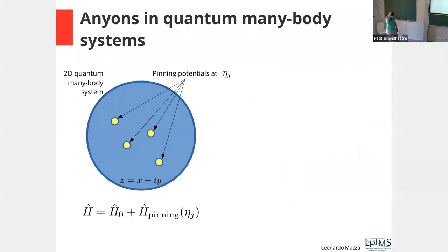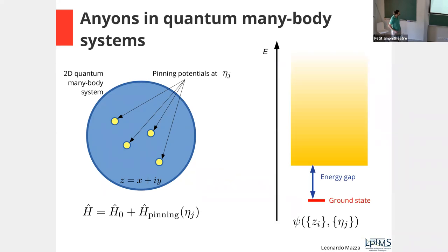My many-body system consists of a gas of bosons or fermions shown in blue, and I imagine shining a pinning potential — say with a laser — at some positions in the cloud. The Hamiltonian is the quantum gas Hamiltonian plus the pinning potential at positions η_j. Dynamically, I have one ground state with an energy gap, and then a continuum of excited states.